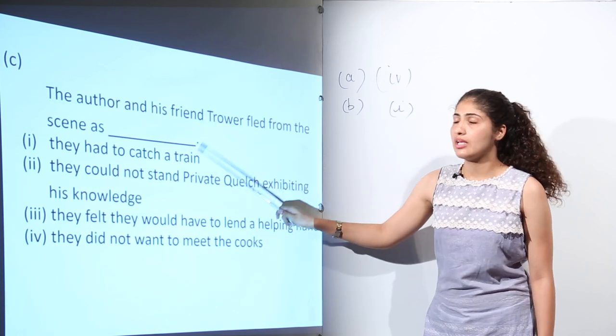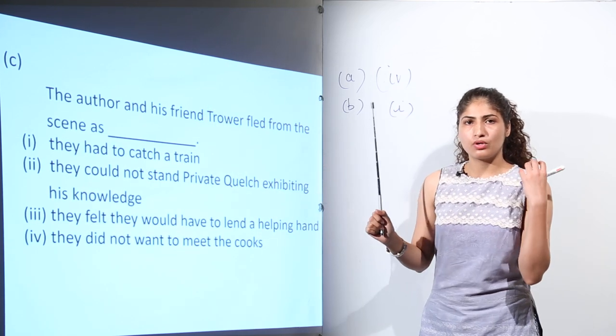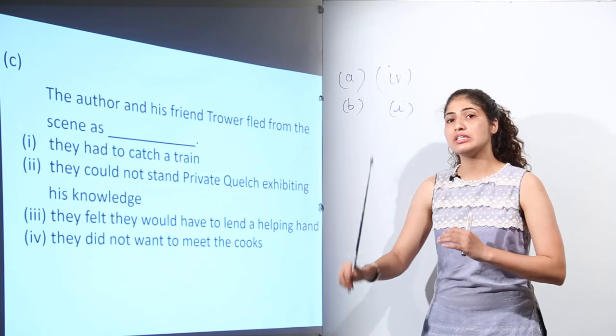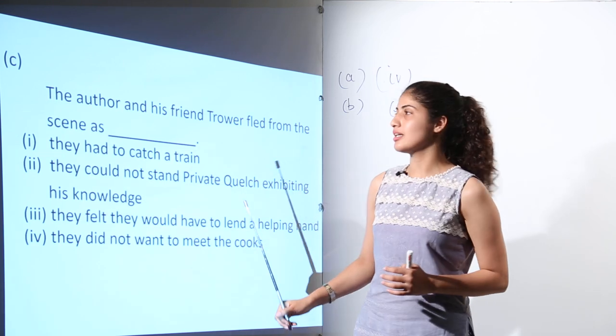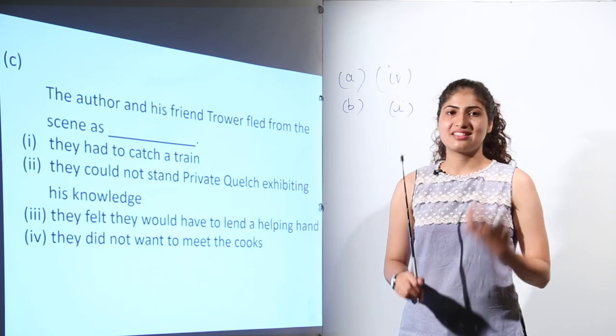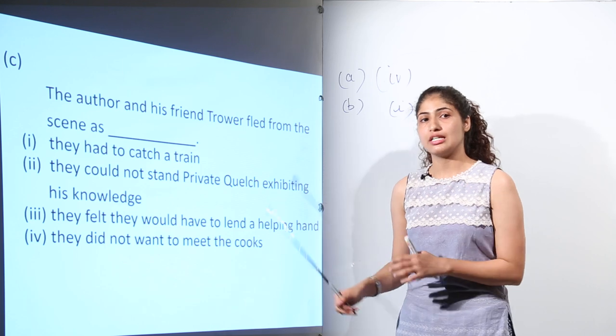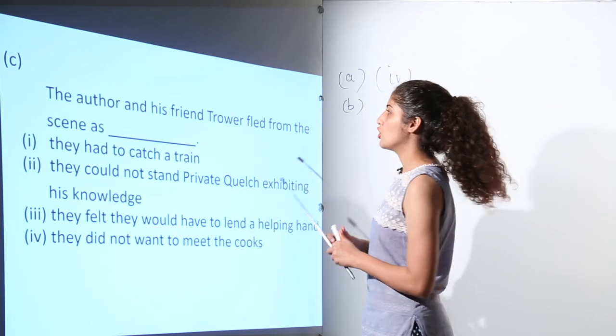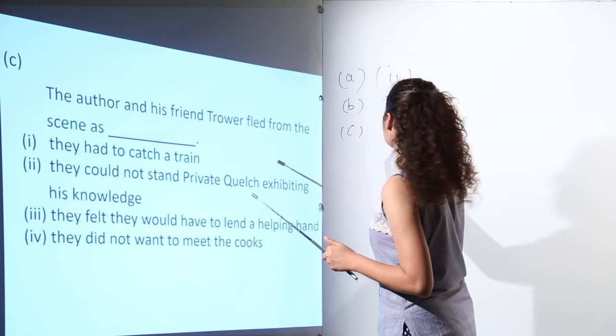The author is asking about the question when the author and Trower were near the window of the kitchen. At that time they saw that professor was exhibiting his knowledge even in the kitchen. So they could not stand private Quelch exhibiting his knowledge. So the answer would be option number two.